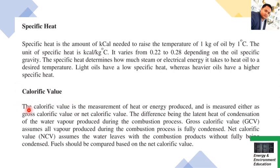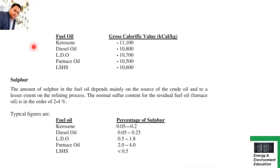Regarding calorific value — already discussed in previous slides — the exam may ask you to define, explain, or give the difference between GCV and NCV. The GCV values for different fuel oils are: kerosene oil 11,100 kcal/kg, diesel oil 10,800, LDO 10,700, furnace oil (FO) 10,500, and LSHS 10,600. You should remember these figures as they can appear as data-based questions.